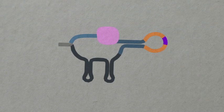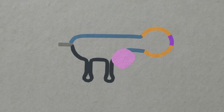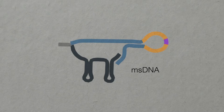Reverse transcriptase recognizes the RNA structure and reverse transcribes the MSD sequence, as well as the additional segment, to create a hybrid RNA-DNA molecule called MSDNA.